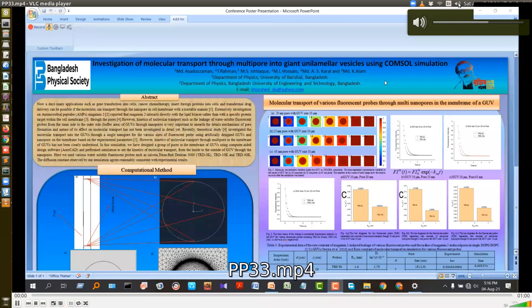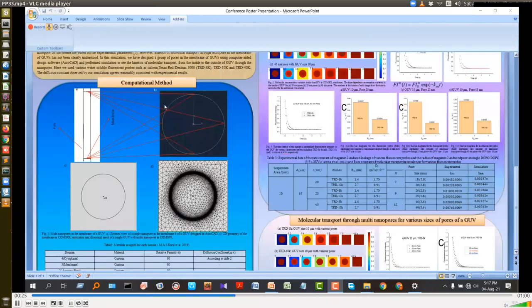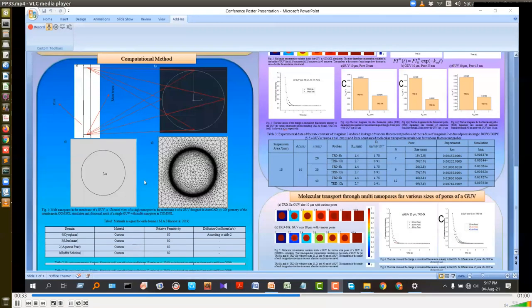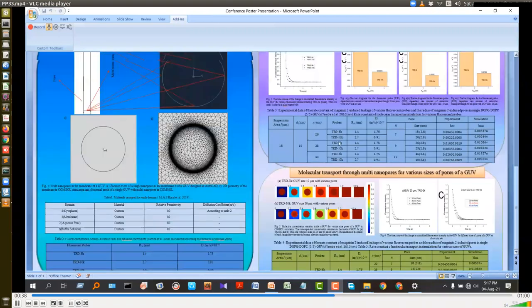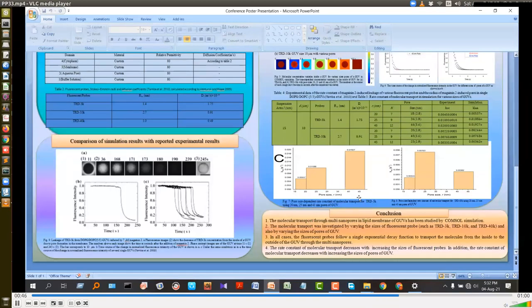What is the investigation of molecular transport through multipore into giant unilamellar vesicle using COMSOL simulation? Recently, theoretical study investigated the molecular transport into the GUVs through a single nanopore for the various size of fluorescent probes using artificially designed GUVs and nanopore on the membrane based on the experimental parameters. However, kinetics of molecular transport through multipore in the membrane of GUVs has not been clearly understood. So in this simulation, we have designed a group of pores in the membrane of the GUVs using computer-aided software, AutoCAD and performed simulation. We used some fluorescent probes such as TRD3K, TRD10K and TRD40K. We can see that when the probe size is increasing, then the rate constant is decreasing. And also we can see that when the pore size increases, then the rate constant is increasing. So in all cases, the fluorescent probes follow a single exponential decay function to transport the molecules from the inside to the outside of the GUVs through the multiple pores which satisfy the experimental results. Thanks for watching.